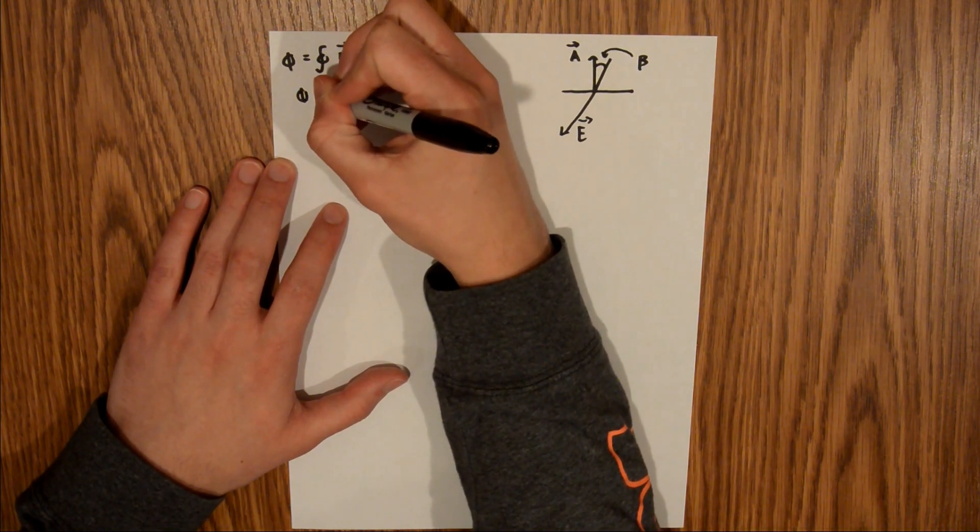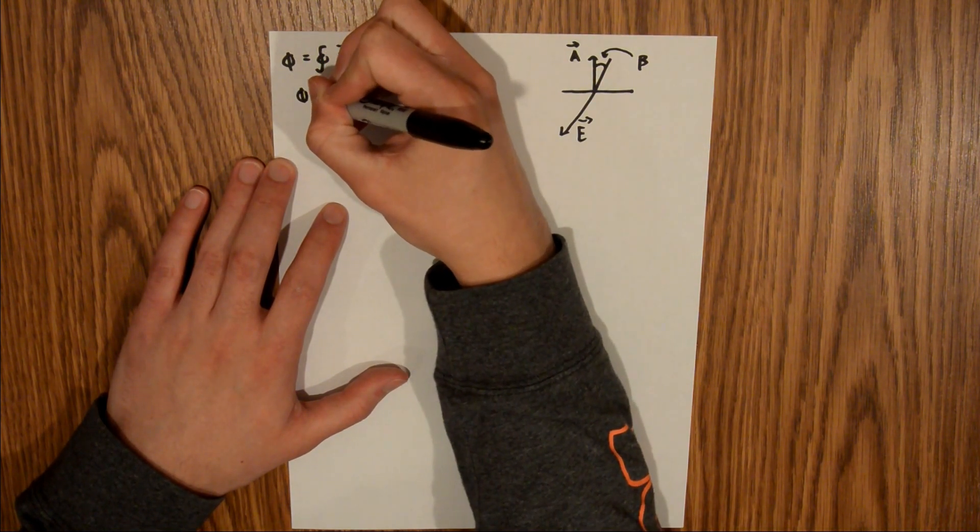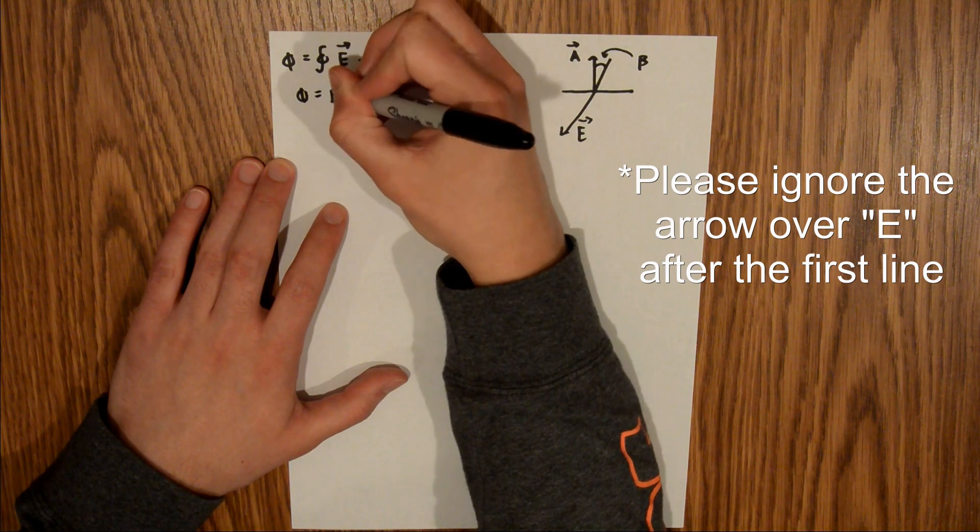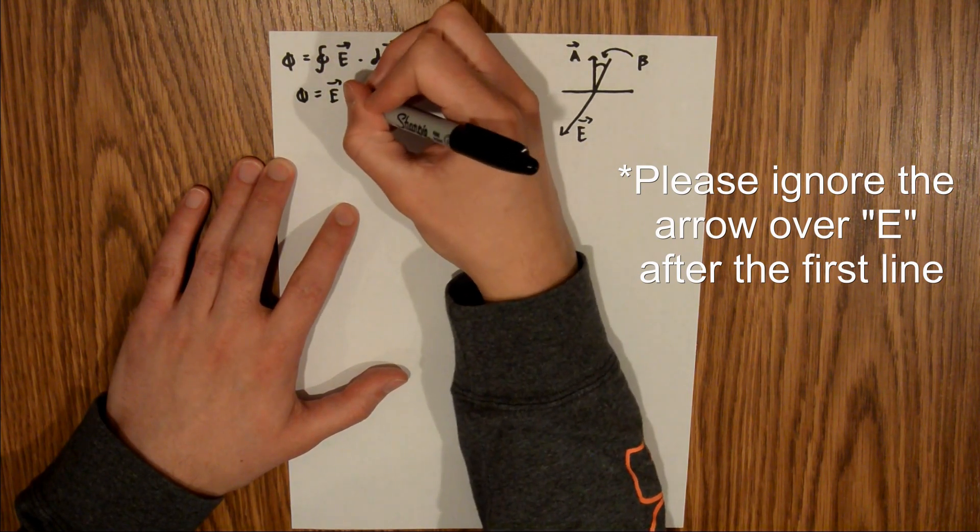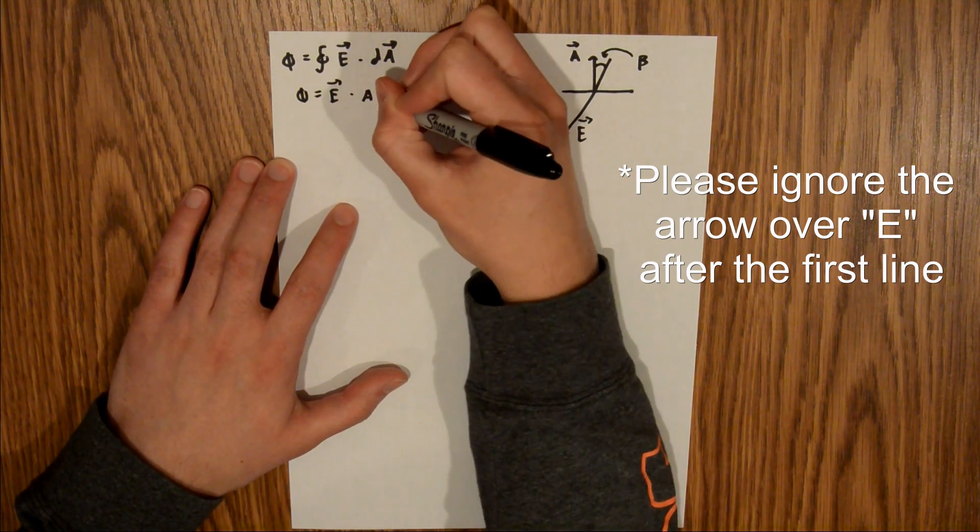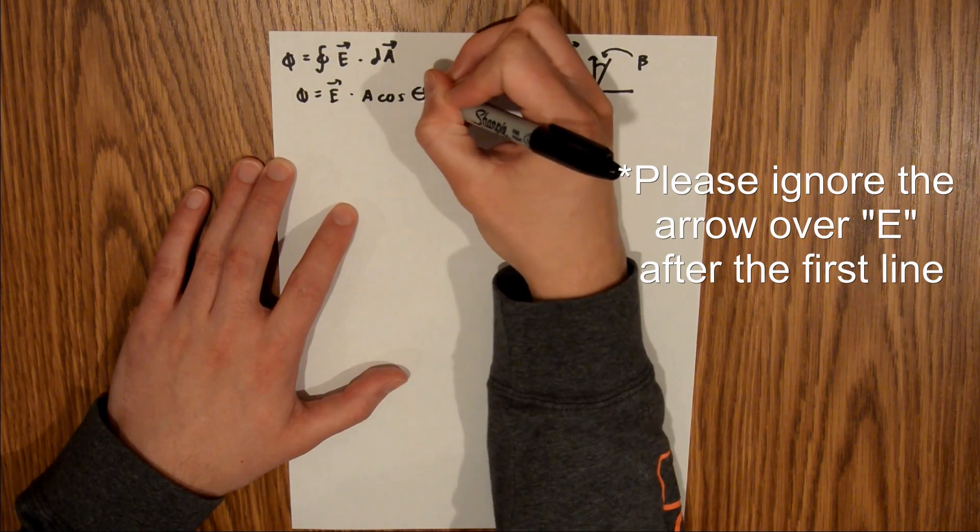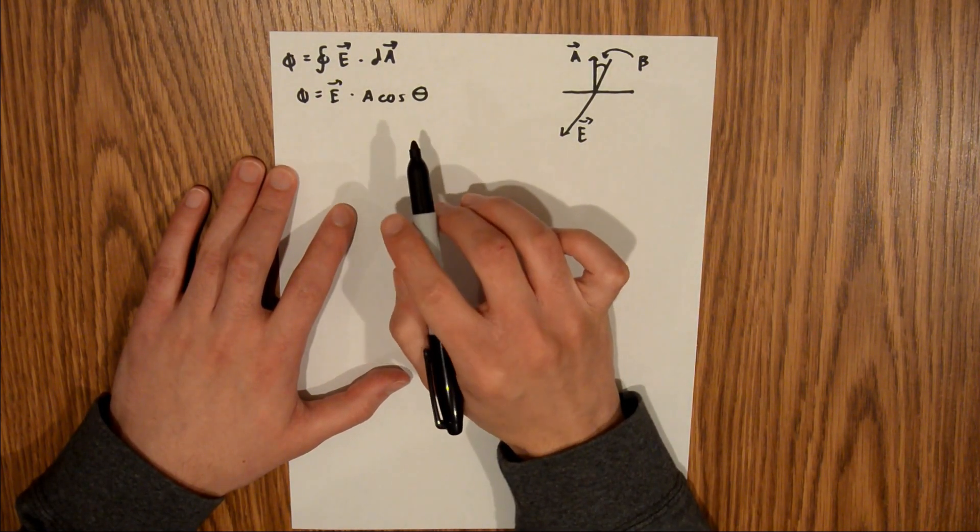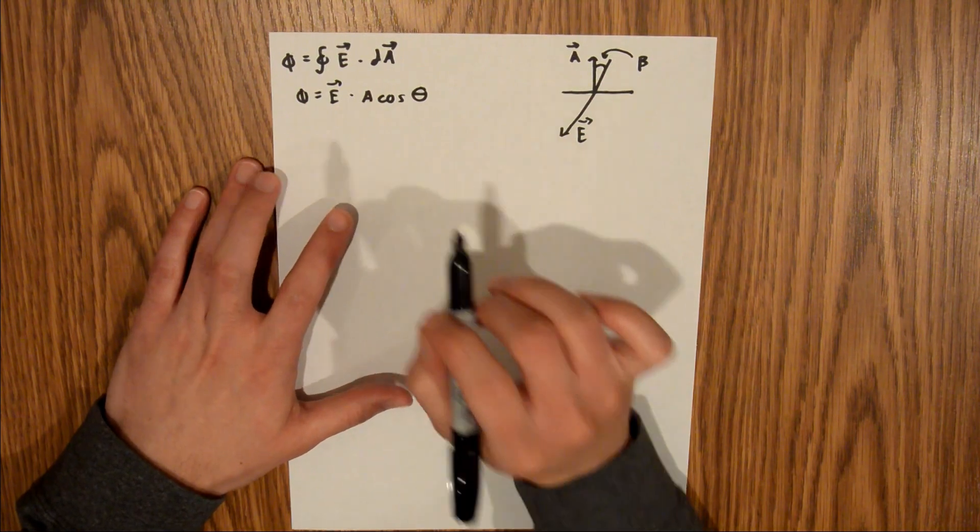It becomes flux equals the electric field times area times cosine theta, and this right here is the component of the area that is perpendicular to the electric field.